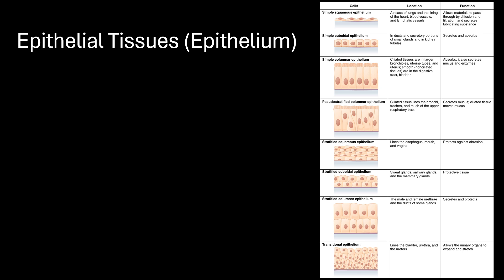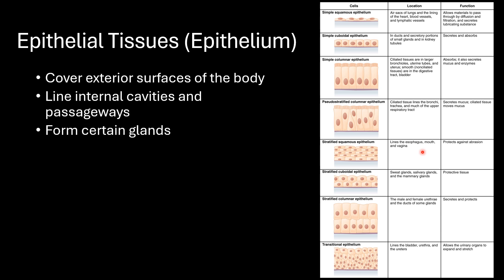Epithelial tissues are basically multiple cells that are stacked next to each other in a specific arrangement. The table on the right has a lot of information, and we'll come back to it in each sample we look at, so don't get overwhelmed. Epithelial tissues cover the exterior surfaces of the body and line internal cavities and passageways, and that's what we're going to focus on in this video. They also help form glands, but we won't focus on that.